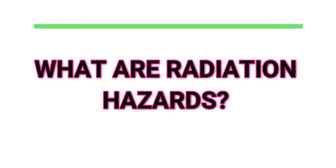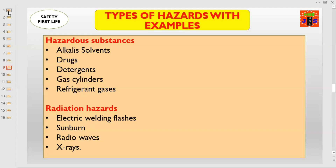What are radiation hazards? Electric welding flashes, sunburn, radio waves, or X-rays — these all are examples of radiation hazards.